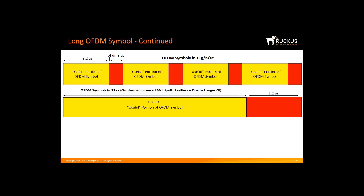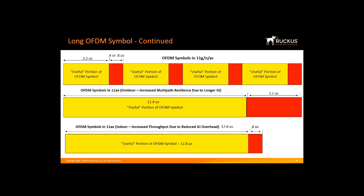How does this longer OFDM symbol affect indoor deployments? Indoors, we don't need a long guard interval, so we combine the best of both worlds. We use the long OFDM symbol but keep the guard interval short for indoor use. Originally, we had 3.2 microseconds of data followed by 0.8 microseconds of overhead, representing a 20% overhead rate. Now, with 11AX indoors, we have 12.8 microseconds of data followed by a 0.8 microsecond guard interval, meaning overhead has come down to less than 10%, giving a throughput benefit.